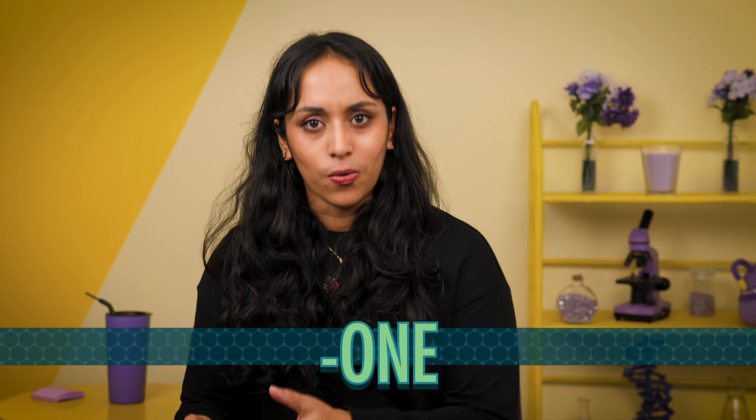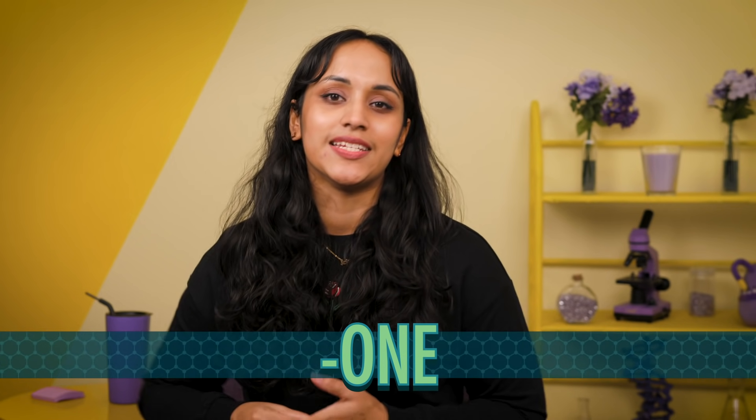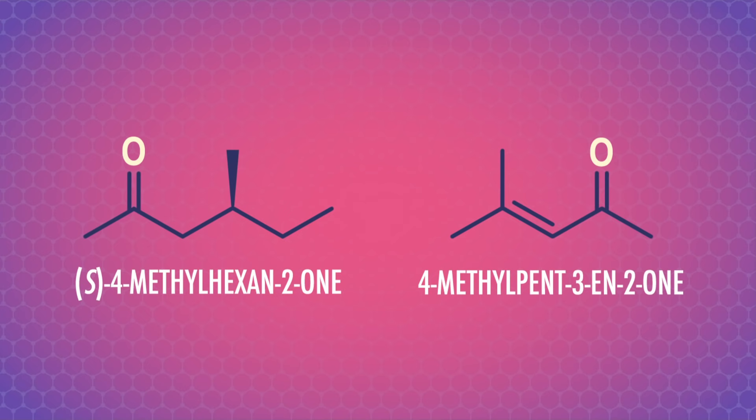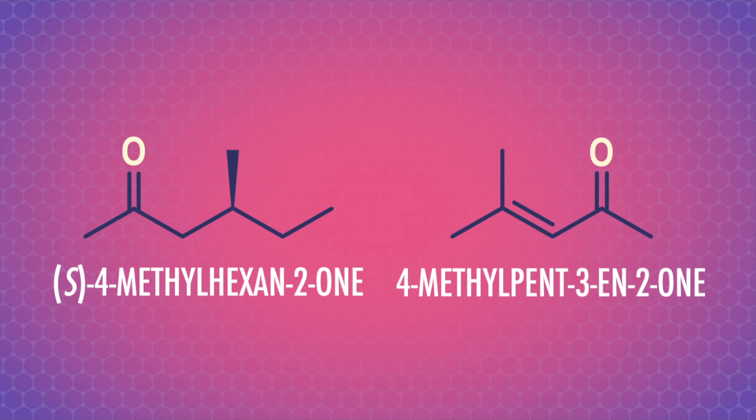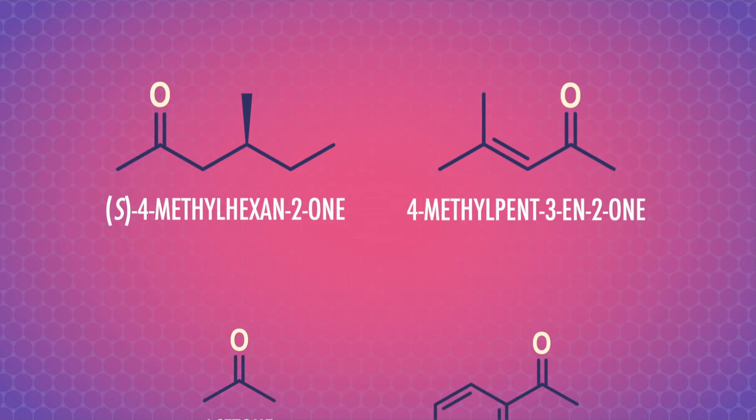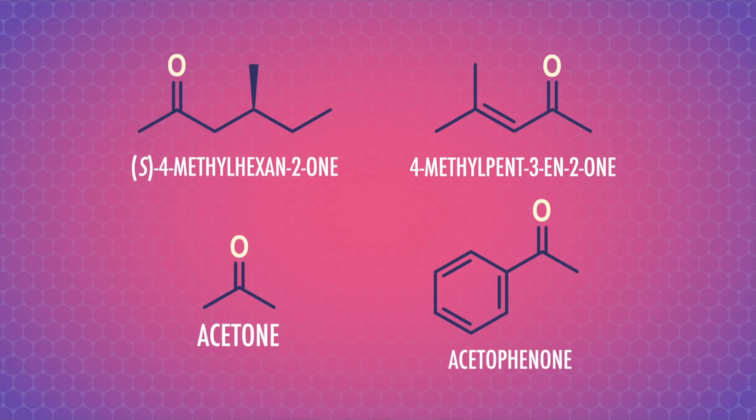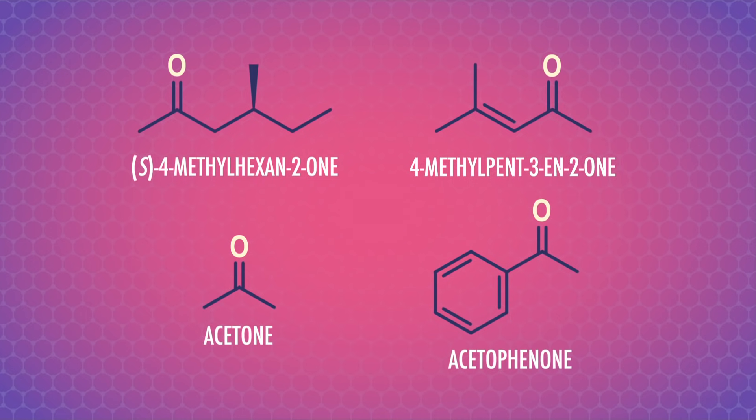Which brings us to ketones, which all have 'one' on the end, so they're relatively easy to spot. Some rely on IUPAC names, which we'll just put on the screen — that's video magic! And others have common names, such as acetone and acetophenone. Now that we've practiced naming aldehydes and ketones, we can get into making them. We've actually seen most of these methods already, so they'll hopefully sound familiar.